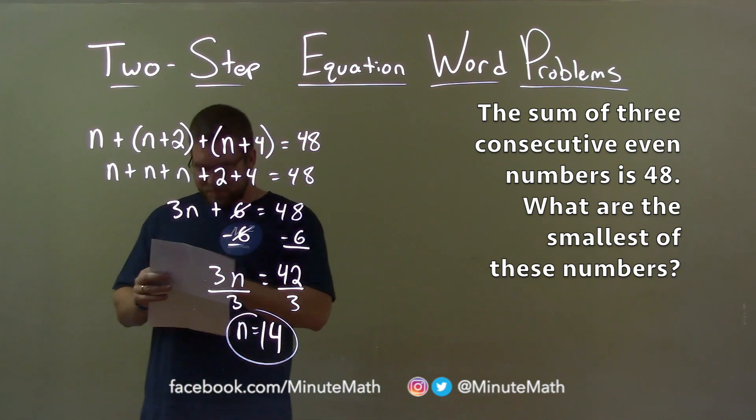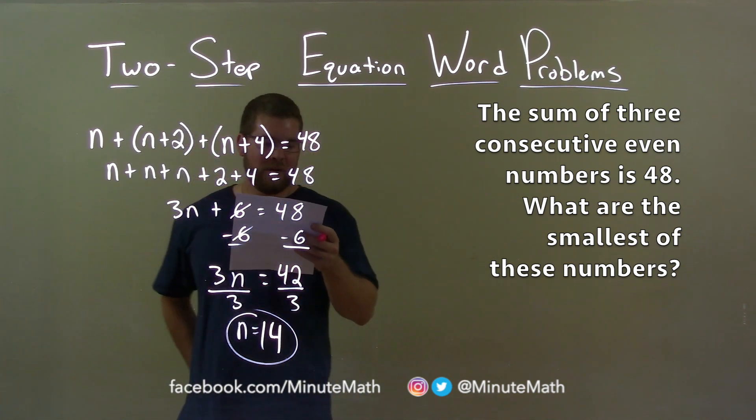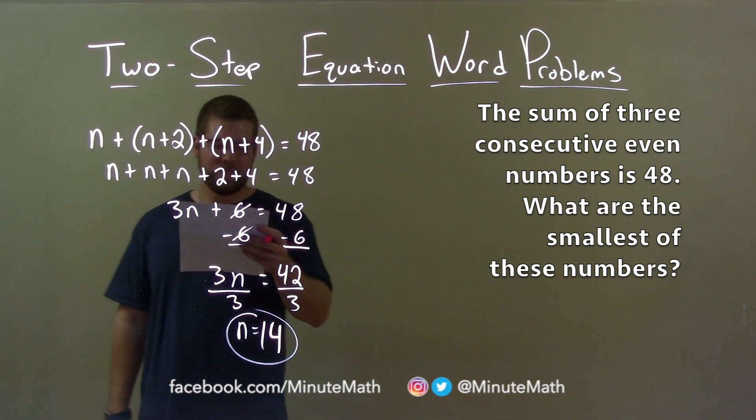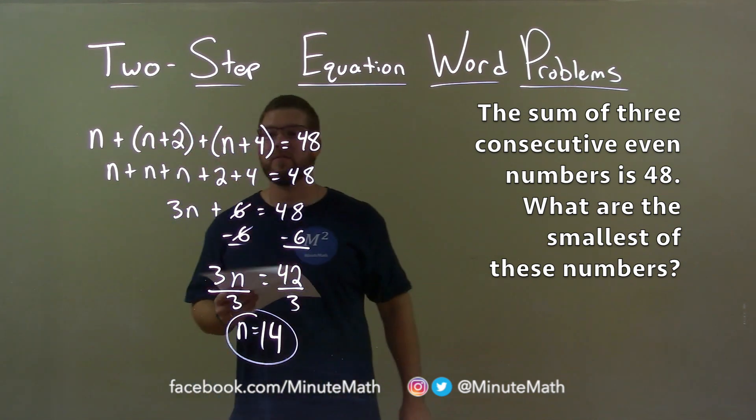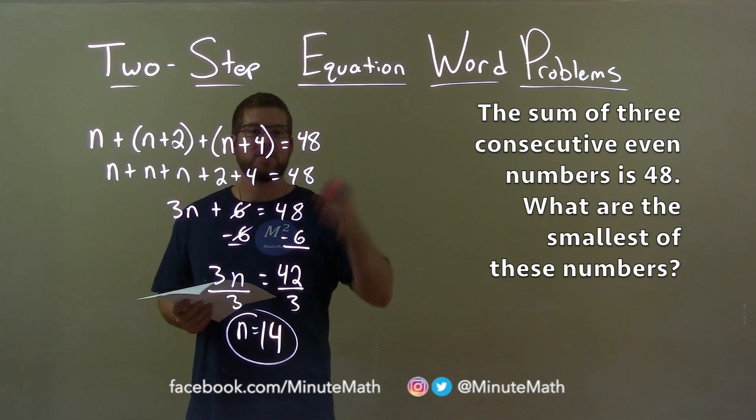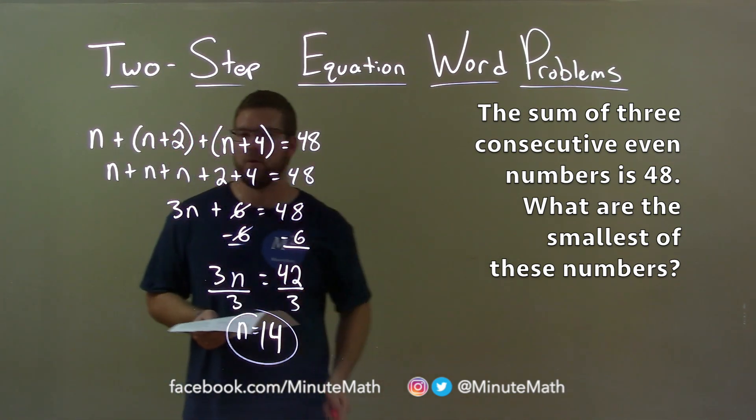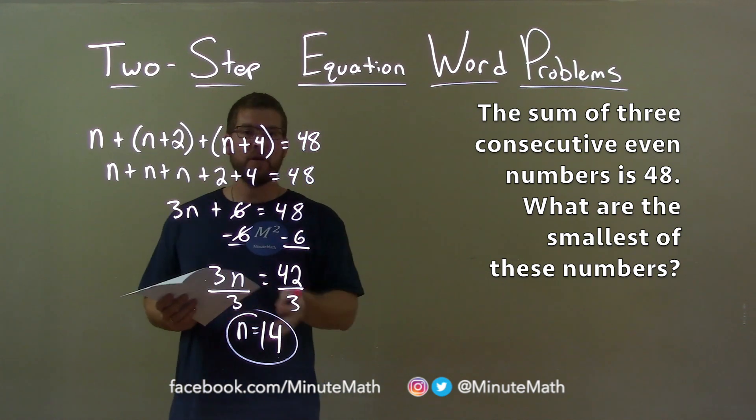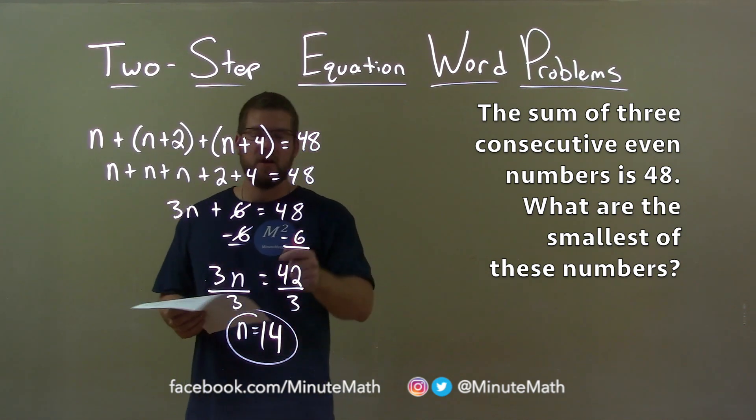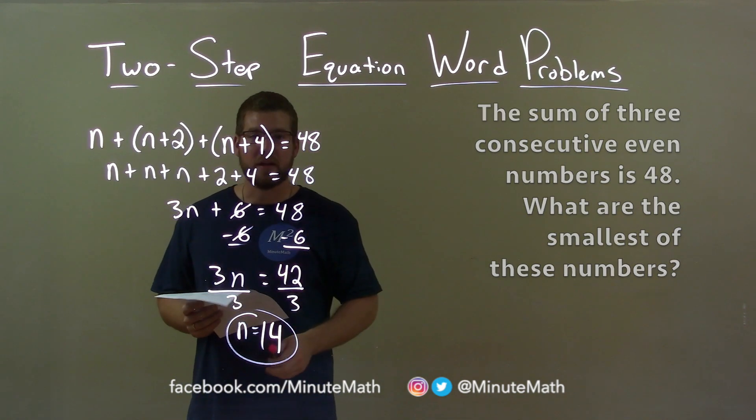Quick recap. We're given the word problem: the sum of three consecutive even numbers is 48. What are the smallest of these numbers? With that information, I created this equation: n plus n plus 2 plus n plus 4 equals 48. I solve that for n being our smallest of these even numbers, which was 14, our final answer.